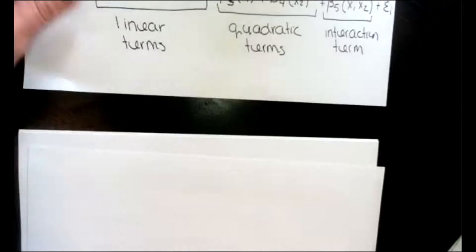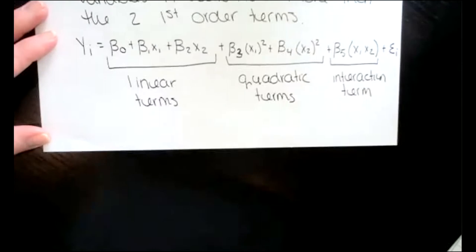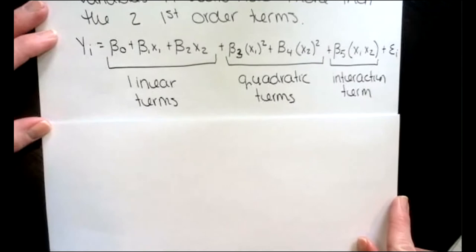Today I want to show you how to add some of these terms to our model — quadratic or interaction terms — and see if we get a better model. A lot of times adding those terms gives us a better model than just the linear terms.